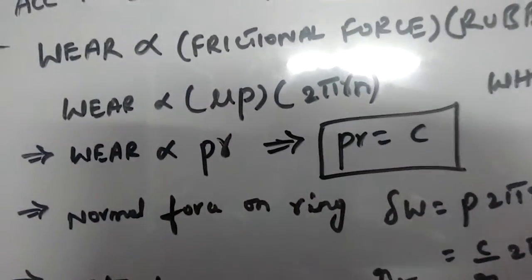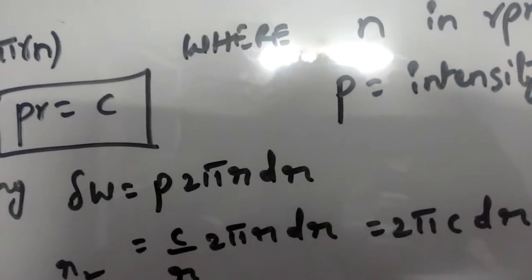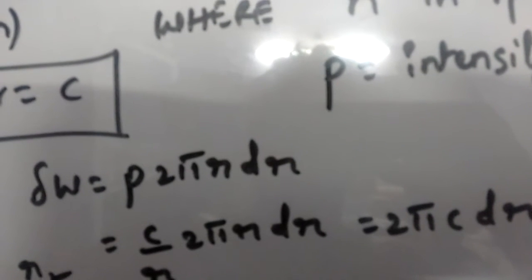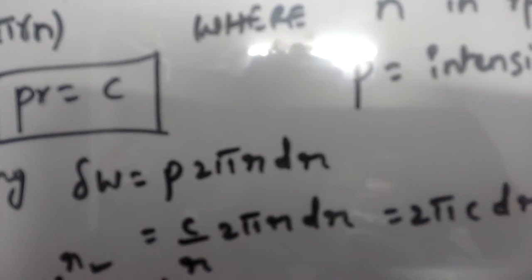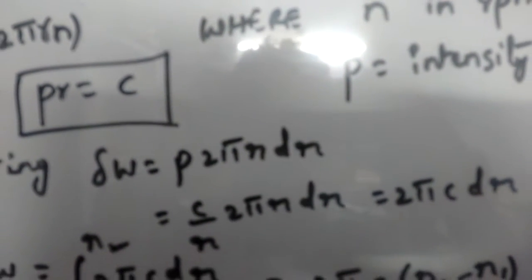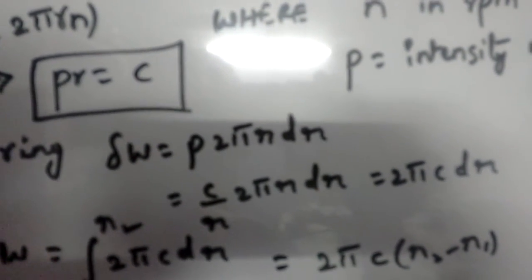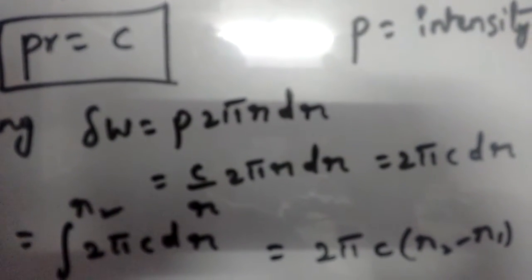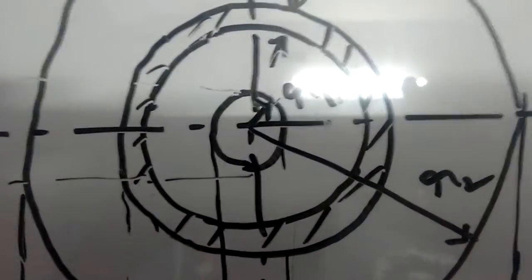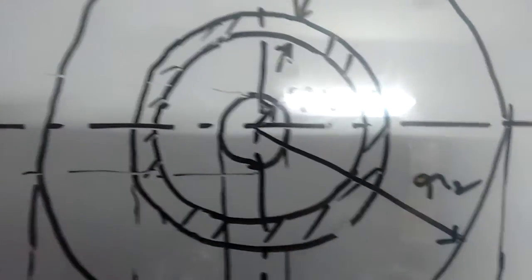The normal force on the elemental ring can be calculated using: δW = p × elemental area, where W is the load and p is the intensity of pressure. Since pressure equals force divided by area, multiplying the intensity of pressure by the elemental area 2π·r·dr gives the normal force acting on the elemental ring.